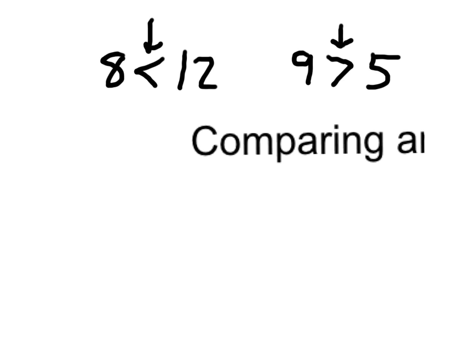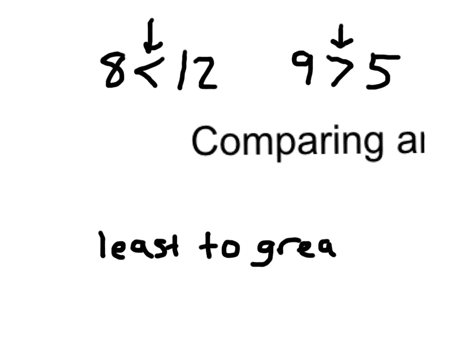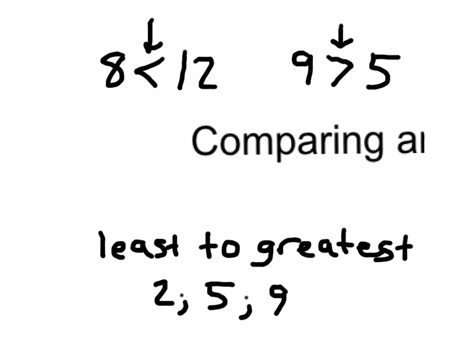When we are ordering numbers, we're thinking about things that are least to greatest or greatest to least. The most common mistake is for students to mix up least to greatest or greatest to least. When we're going to list numbers, we're going to put a semicolon in between those numbers. The common mistake is to accidentally put things from greatest to least when you're supposed to put them from least to greatest, or vice versa.